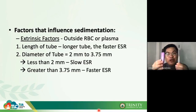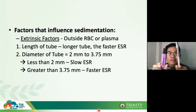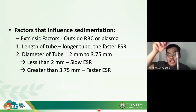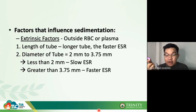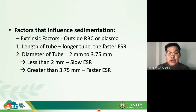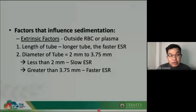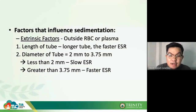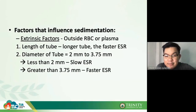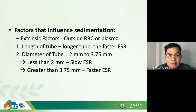To illustrate tube length, a longer tube like a Muji pen would give faster ESR compared to a shorter tube. Regarding diameter: less than 2 mm means slower ESR; greater than 3.75 mm means faster ESR. So diameter outside the optimal range of 2 to 3.75 mm will affect your ESR result.